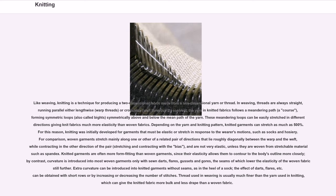For comparison, woven garments stretch mainly along one or other of the related pair of directions that lie roughly diagonally between the warp and the weft, while contracting in the other direction of the pair — stretching and contracting with the bias — and are not very elastic, unless they are woven from stretchable material such as spandex. Knitted garments are often more form-fitting than woven garments, since their elasticity allows them to contour to the body's outline more closely.